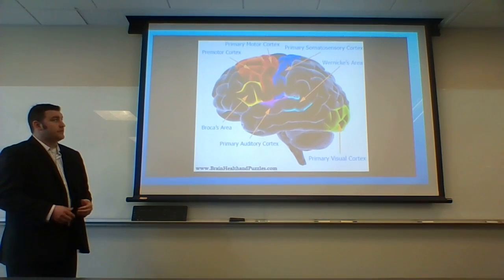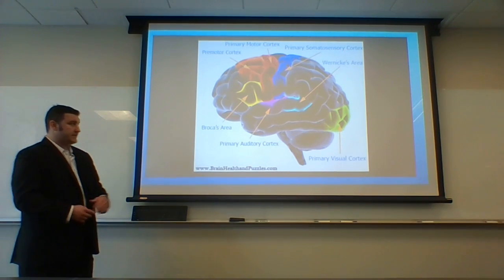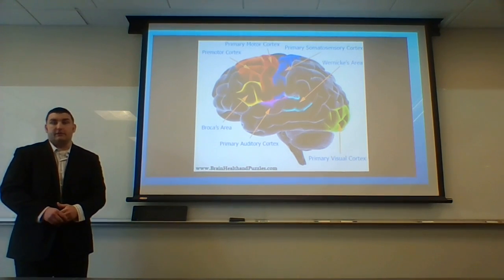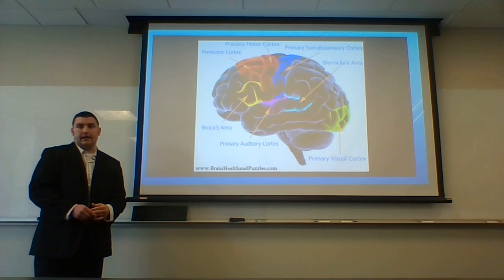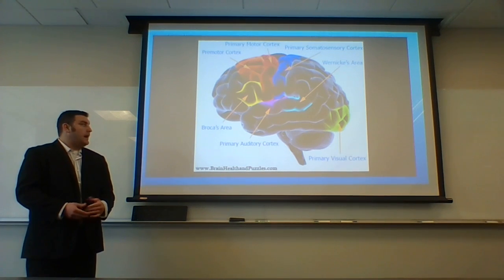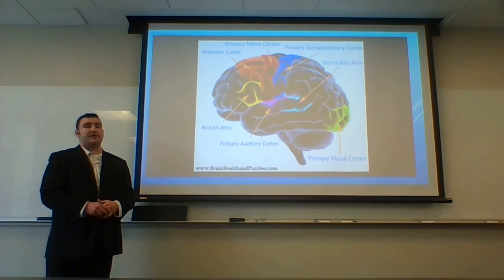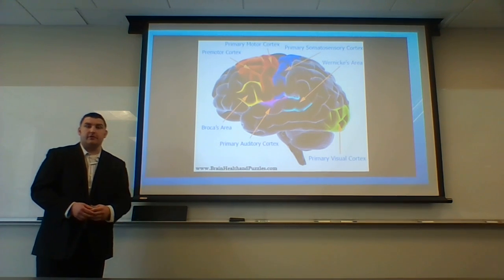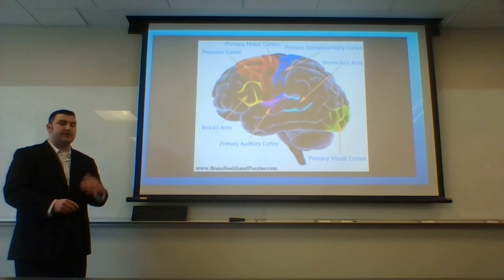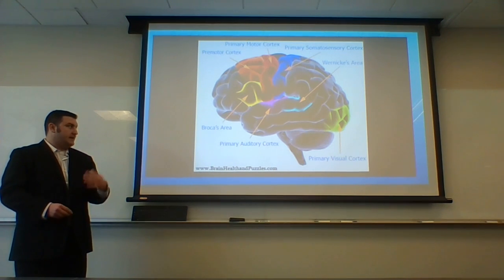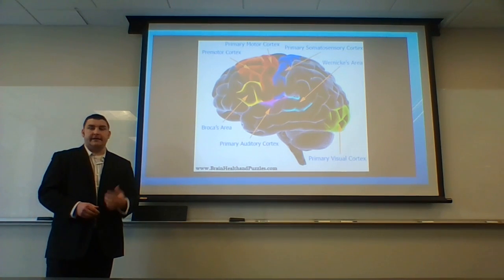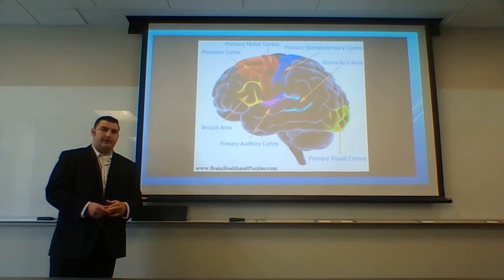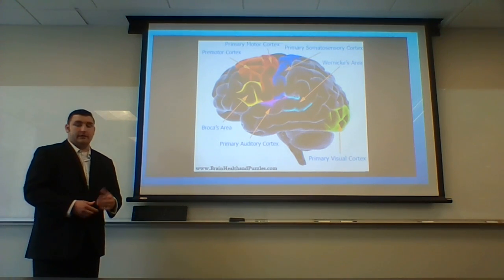Interesting fact: the Broca's area on the left deals mostly with language. If you grew up in a bilingual household or picked up a language before the age of seven, this area deals with both languages. If you're like myself and trying to learn a language later in life, your brain will actually adapt and develop a new area dedicated to that language. It's believed that the left side of the brain is the primary area where language is dealt with.